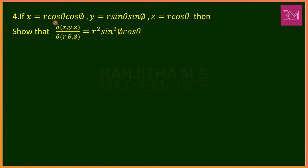Next problem: if x = r cosθ cosφ, y = r sinθ sinφ, z = r cosθ, show that del(x,y,z)/del(r,θ,φ) = r² sin²φ cosθ. Here the functions are x, y, z and the variables are r, θ, φ. We need to find the Jacobian and show it equals r² sin²φ cosθ.